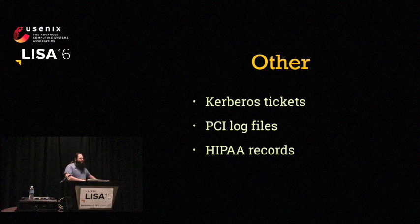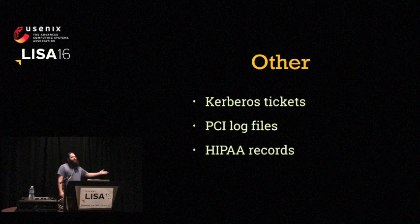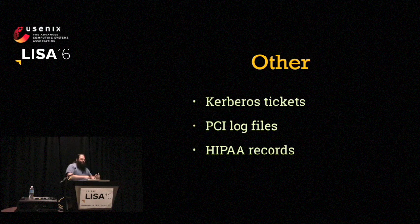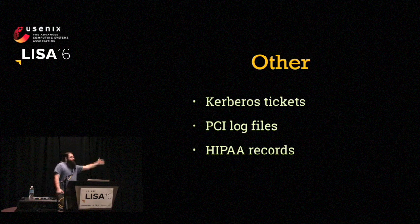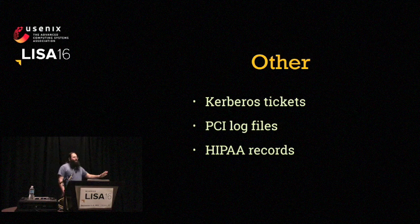Beyond this, there's a long tail of miscellaneous stuff. Some of these look close enough to one of the main three that you can make it work — for instance, Kerberos machine tickets look kind of like keys, except they have some custom special management stuff you have to do, but you can mostly just treat them like key files. Other times they'll need purpose-built tools — for example, HIPAA log records. This is not an exhaustive list of everything in the world of secrets.